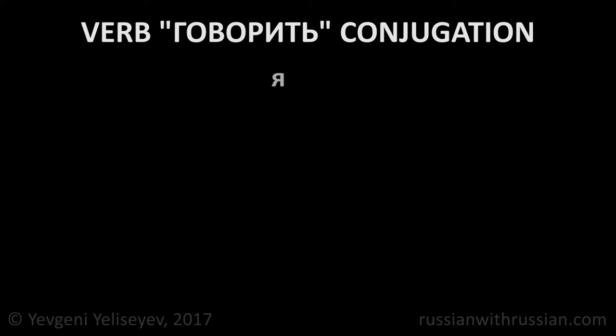In the first person singular Я, the ending is Ю. Я говорю — I speak. In the second person singular Ты, and formal Вы, the ending is ИШЬ. Ты говоришь — you speak.